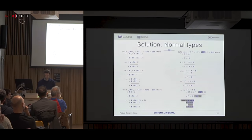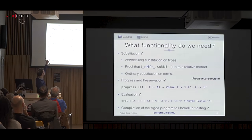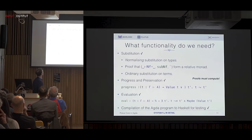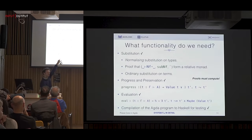We want to implement substitution, but now we need to make sure our substitution operation is normalizing. There are various ways to do that — I've used hereditary substitutions and a combination of normalization by evaluation and substitutions. That works fine, except you actually need proofs about normalization potentially in your proofs about substitution, but that all works out.